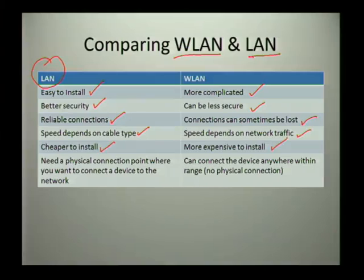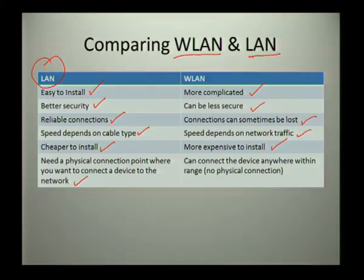In a LAN, you need a physical connection point where you want to connect a device to a network, whereas in a wireless LAN there is no physical connection and you can basically connect anywhere within the radius of your wireless LAN.